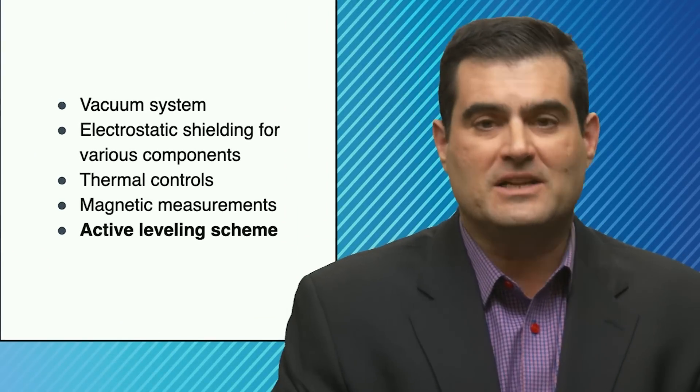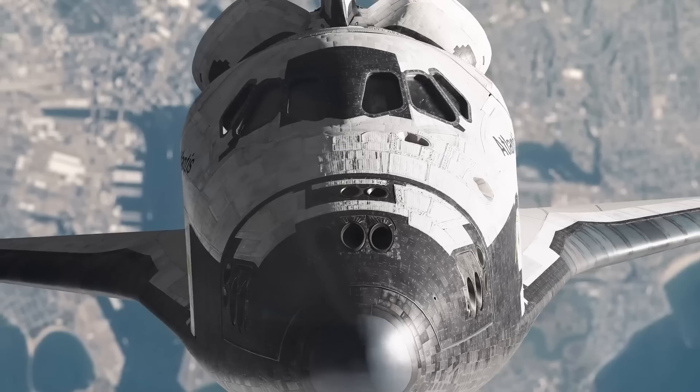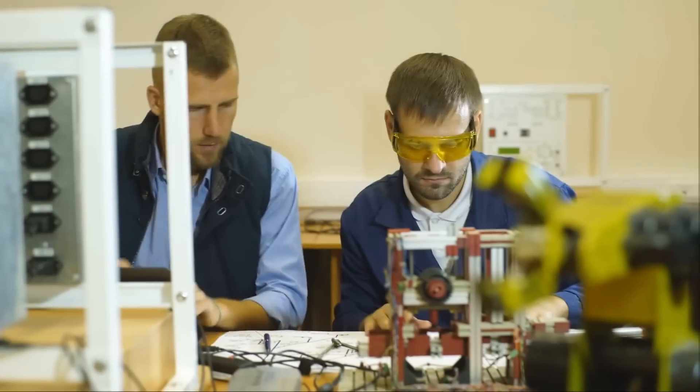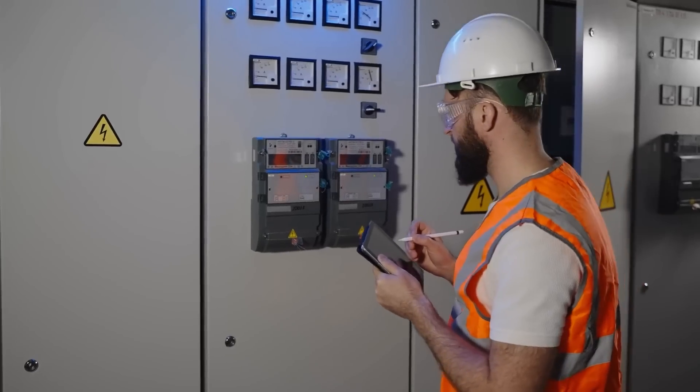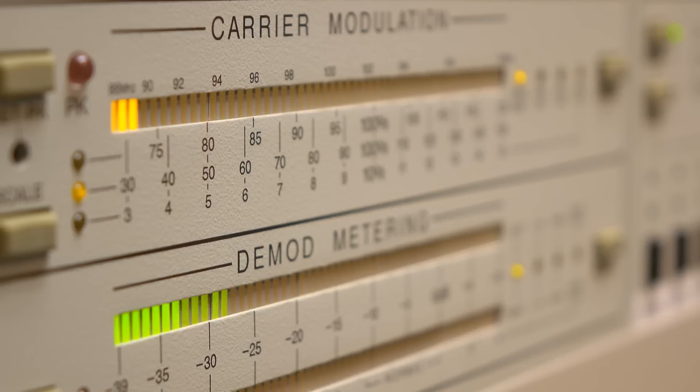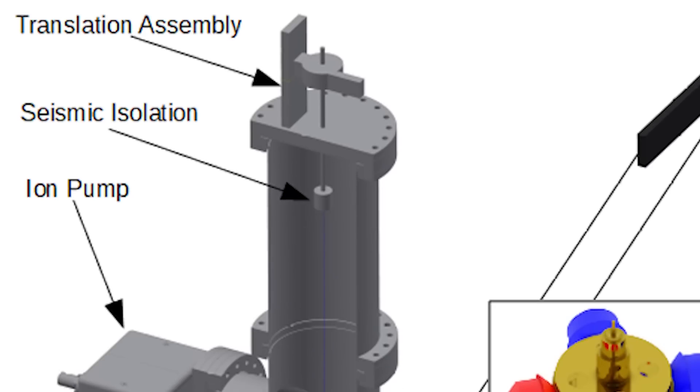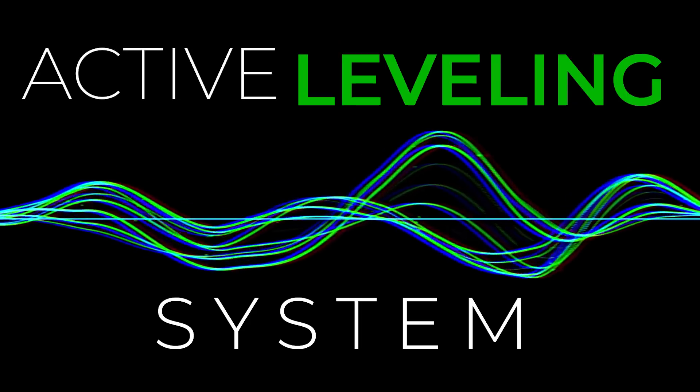But you can't launch it into space, at least on the budget of a California State University like UCSD or Humboldt State University. So they make use of incredible precision control over the environment, including vacuum, shielding magnetically, electrostatic grounding, and what's called an active leveling system.